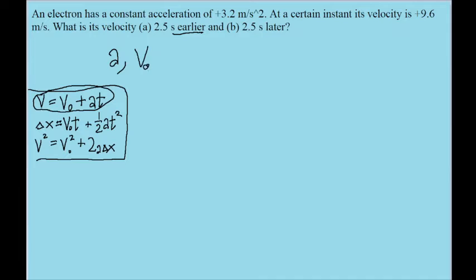And let's say the velocity given to us, 9.6 meters per second, is the initial velocity in this case. So we're looking for some velocity at some point before and afterwards.